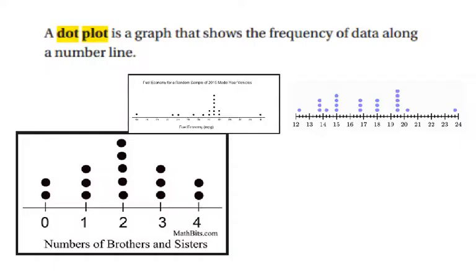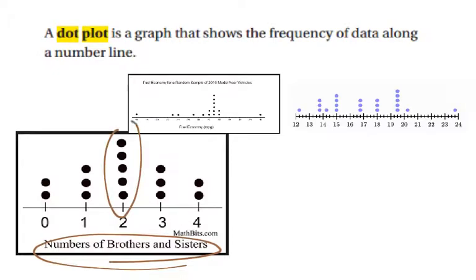In this dot plot that I've just made a little bit larger, you can see they have a number line going across the bottom. It goes from 0 to 1, 2, 3, and 4. And what they are presenting is number of brothers and sisters that someone may have. So we can see from looking at this dot plot that two of the respondents to the survey had no siblings, three respondents to the survey had one sibling, and then one, two, three, four, five respondents to the survey had two siblings. Three respondents had three siblings and two respondents had four siblings.